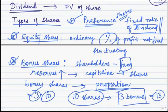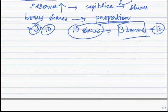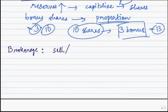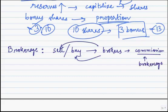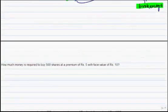One more thing to know before we solve problems is the term brokerage. Buying or selling of shares happens in the share market or stock exchange through people or agencies called brokers. Whether you want to buy or whether you want to sell, brokers take some kind of commission for both activities. This commission which they take is called brokerage. That's all for this video. In the next video we shall solve some problems based on these concepts. Thank you.